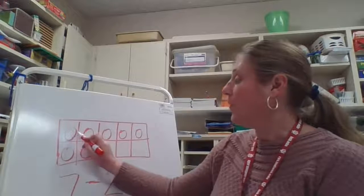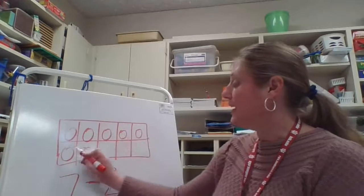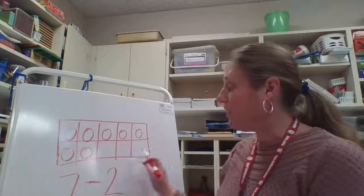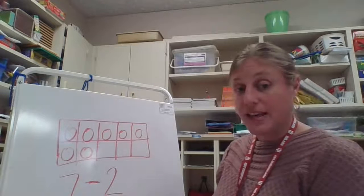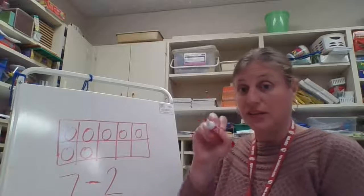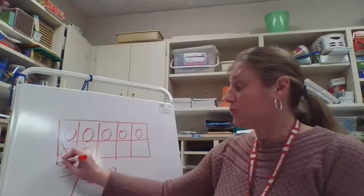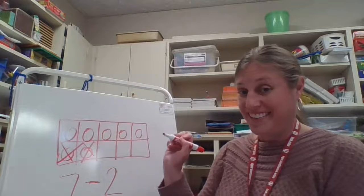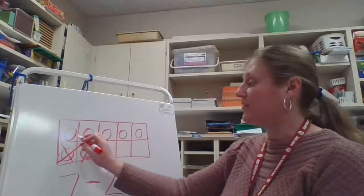So I have seven, let's count: one, two, three, four, five, six, seven. So I have seven in all and it says to take away two. So I'm going to take away two counters and when I subtract, I like to cross off.